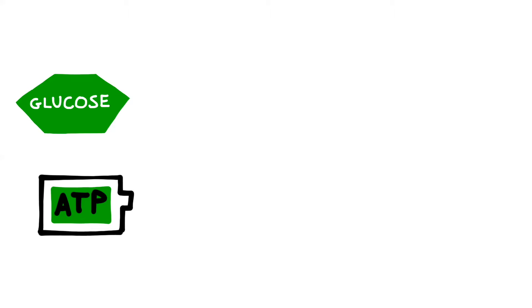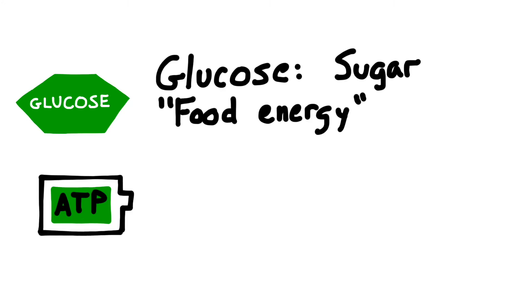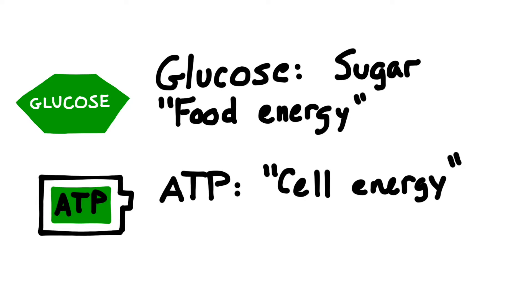Before we can get started, we'll need to review two important types of energy in biology. The first is glucose and the second is ATP. Glucose is a type of energy that is found in food. ATP, or adenosine triphosphate, is a type of energy that's found in cells. I've shown it here as a battery because it is a rechargeable and reusable form of energy.